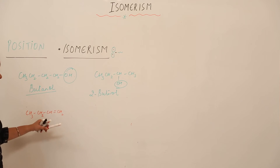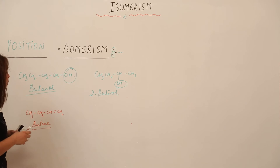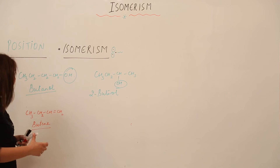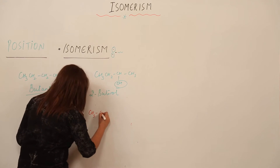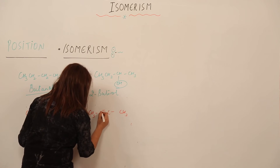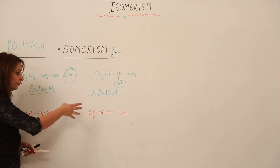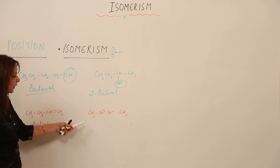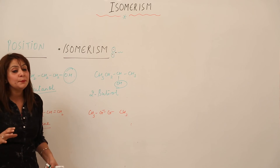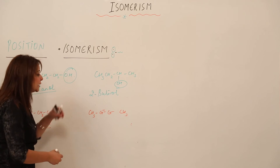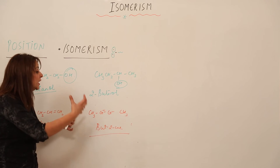Another example: consider a compound with four carbon atoms and a double bond — its name is butene. I can make its isomer by changing the position of the double bond, moving it to a different carbon. The new compound has the same molecular formula — four carbons, eight hydrogens — but it has become but-2-ene because the double bond has moved to the second position.